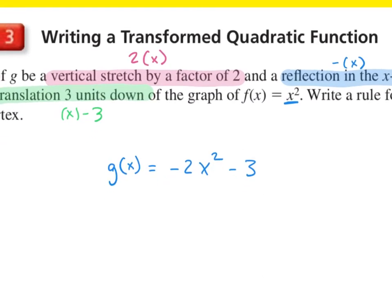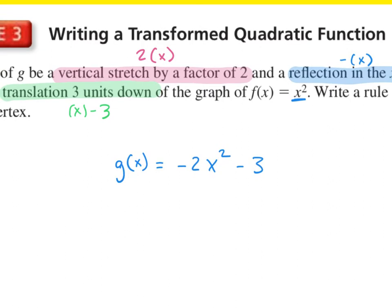Next, we need to identify the vertex. We know that our vertex form is a times x minus h squared plus k, and our vertex is h comma k. Whatever we add or subtract inside the parentheses is our first number in our vertex. Whatever we add or subtract outside the parentheses is our second number in our vertex.